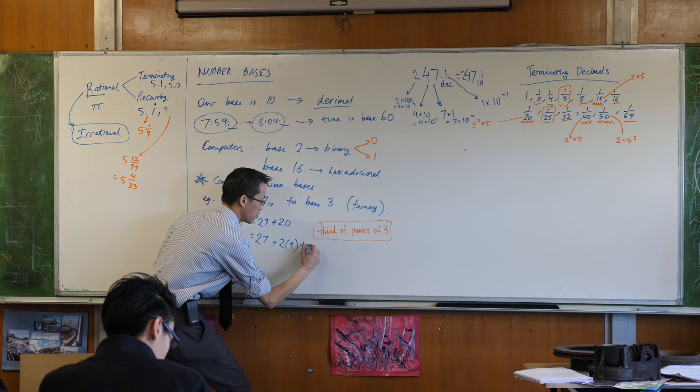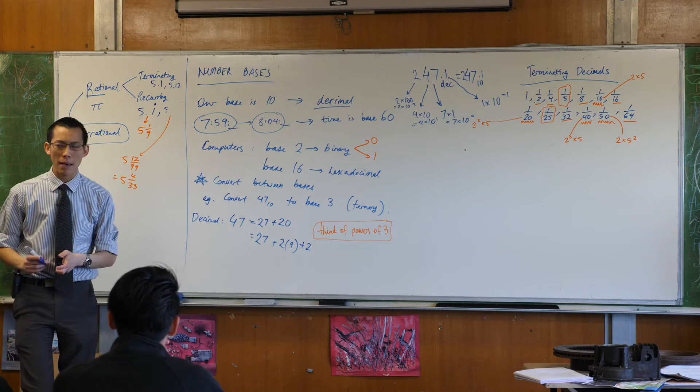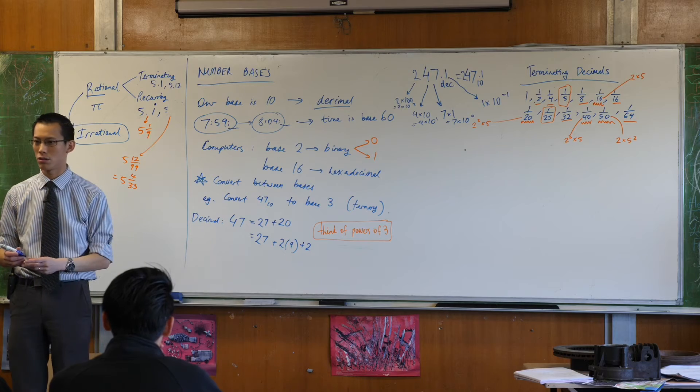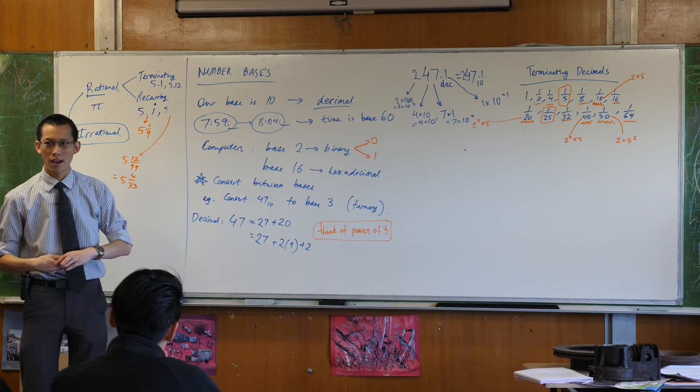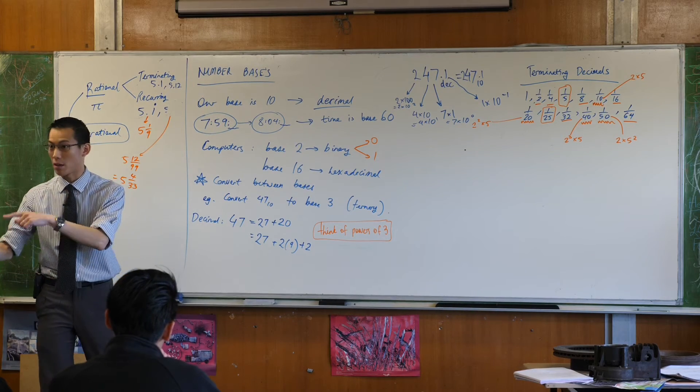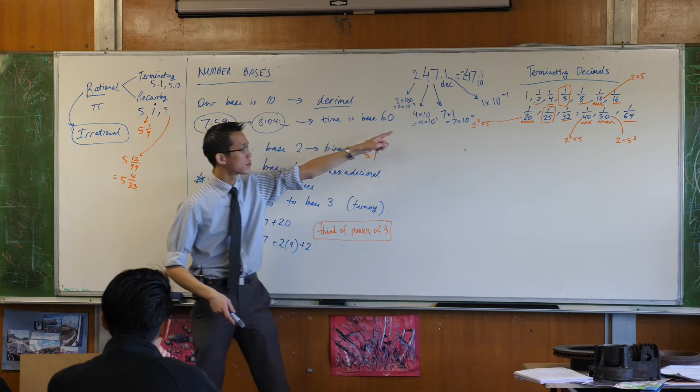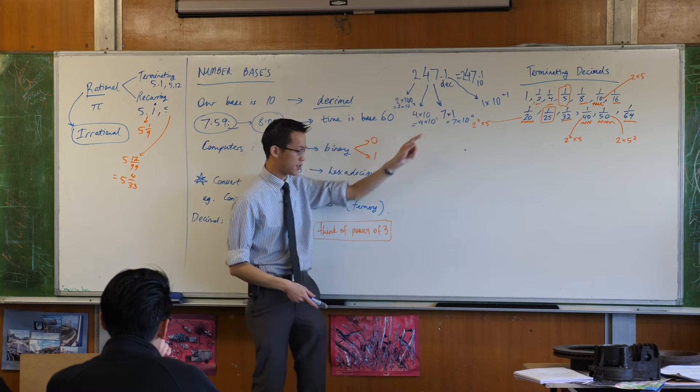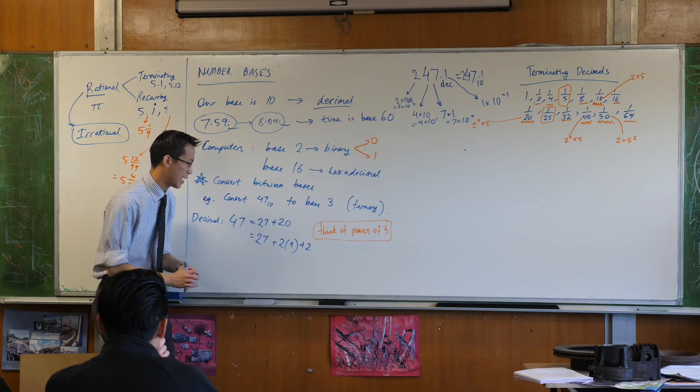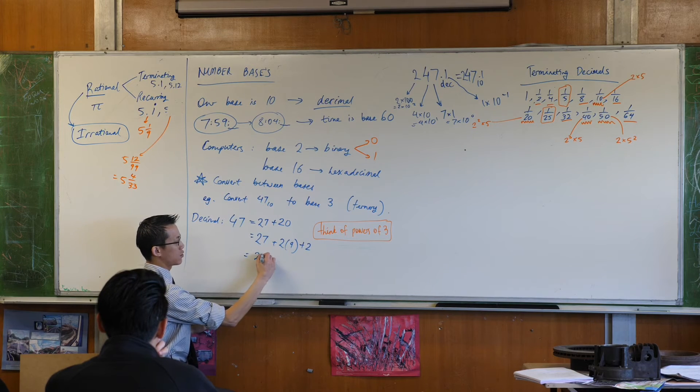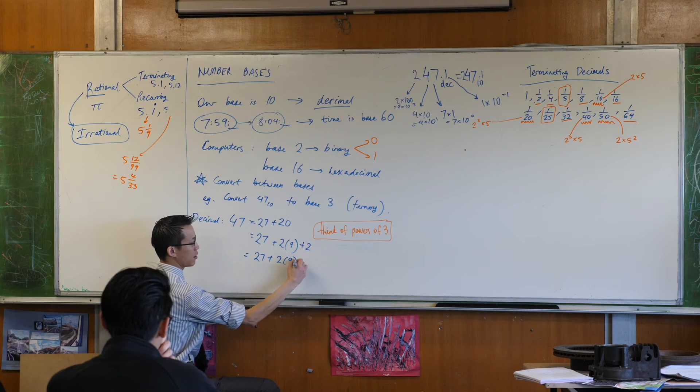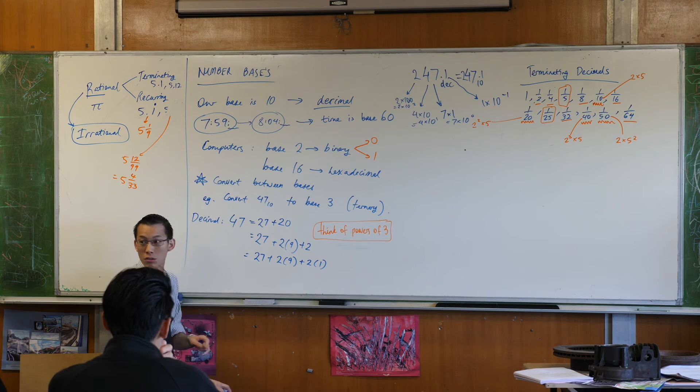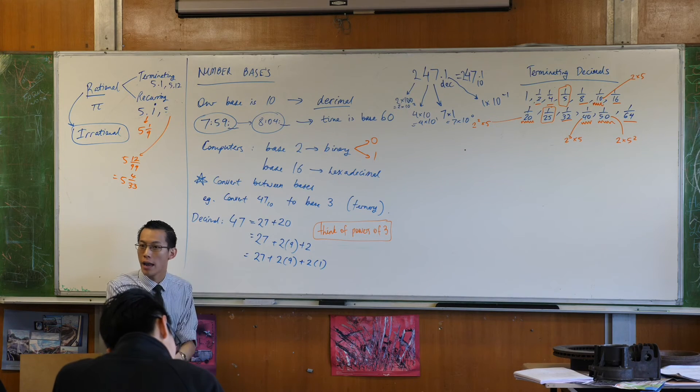2 lots of 9 is 18 so what's left over at the end? 2. It's not a trick question. What's the biggest power of 3 you can fit into 2? I guess you mean 3 to the power of 0 which is 1. The units are always the last one. So what I've got here is 27 plus 2 of these plus 2 of these. Do you agree? And I have the whole number now.